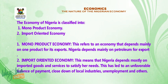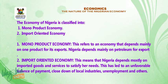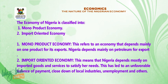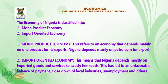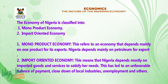Monoproduct economy refers to an economy that depends mainly on one product for its exports. Nigeria depends mainly on petroleum for exports. Import-oriented economy means that Nigeria depends mostly on imported goods and services to satisfy her needs. This has led to unfavorable balance of payments, close-down of local industries, and unemployment.